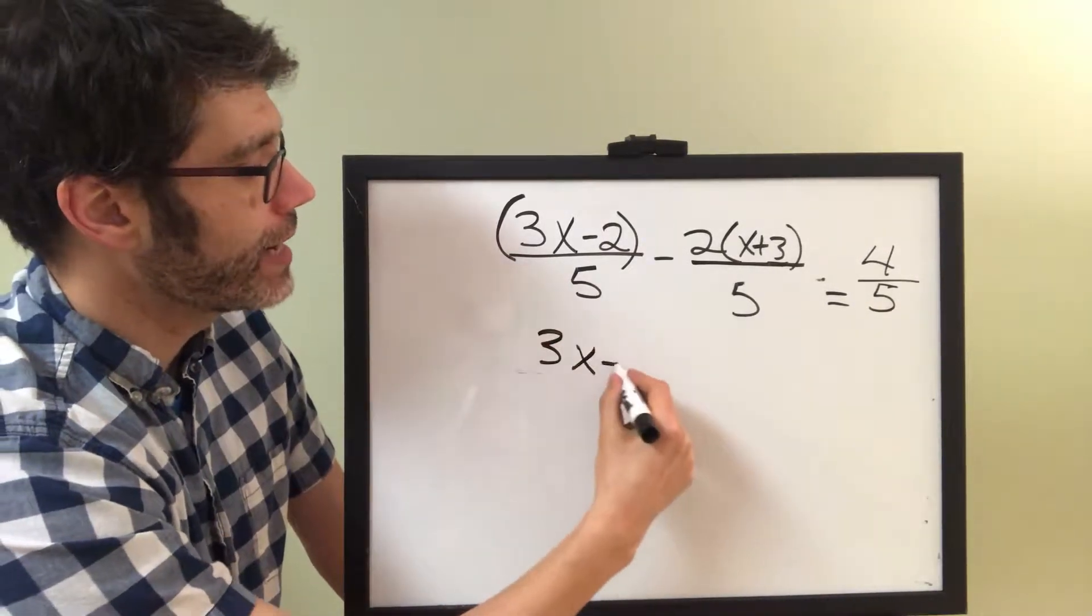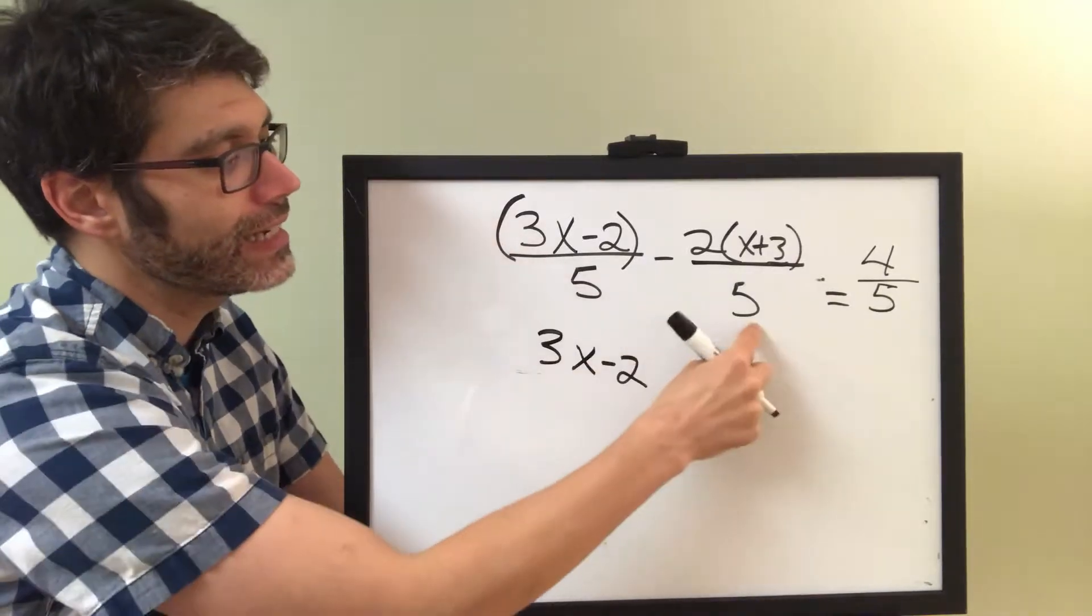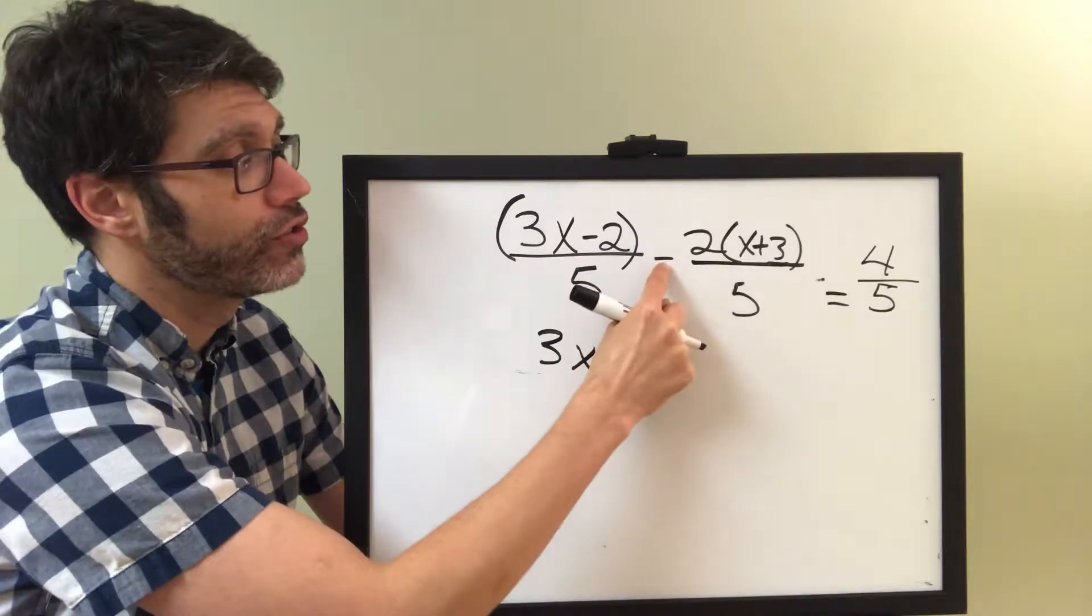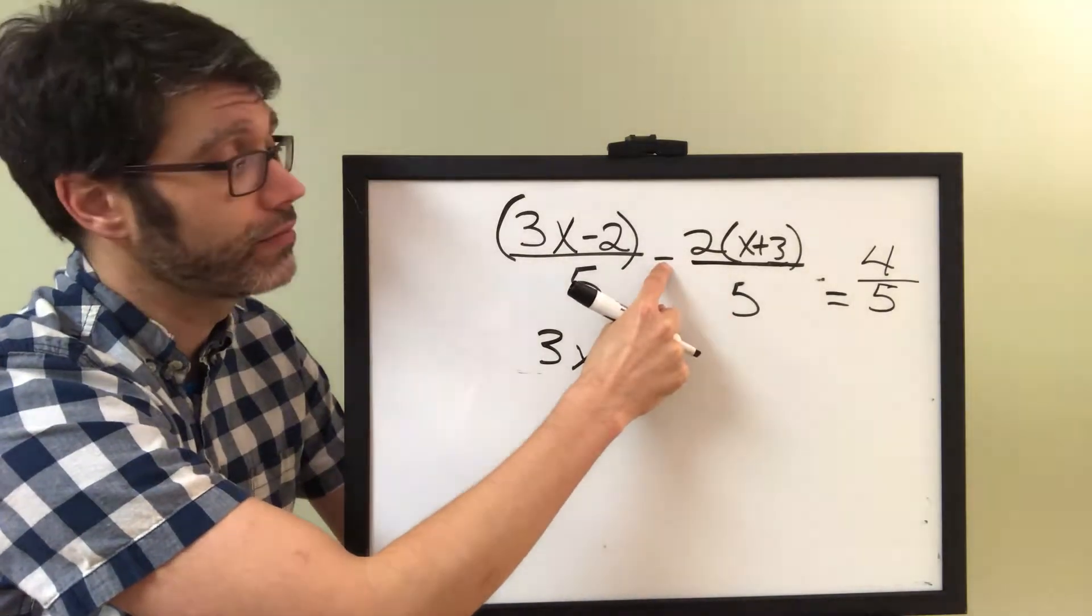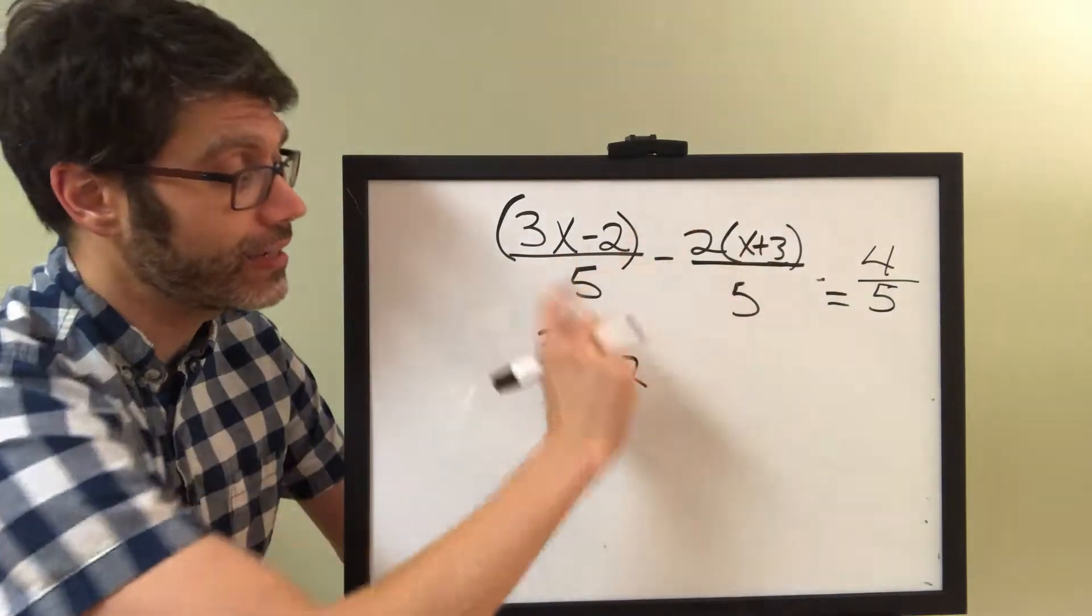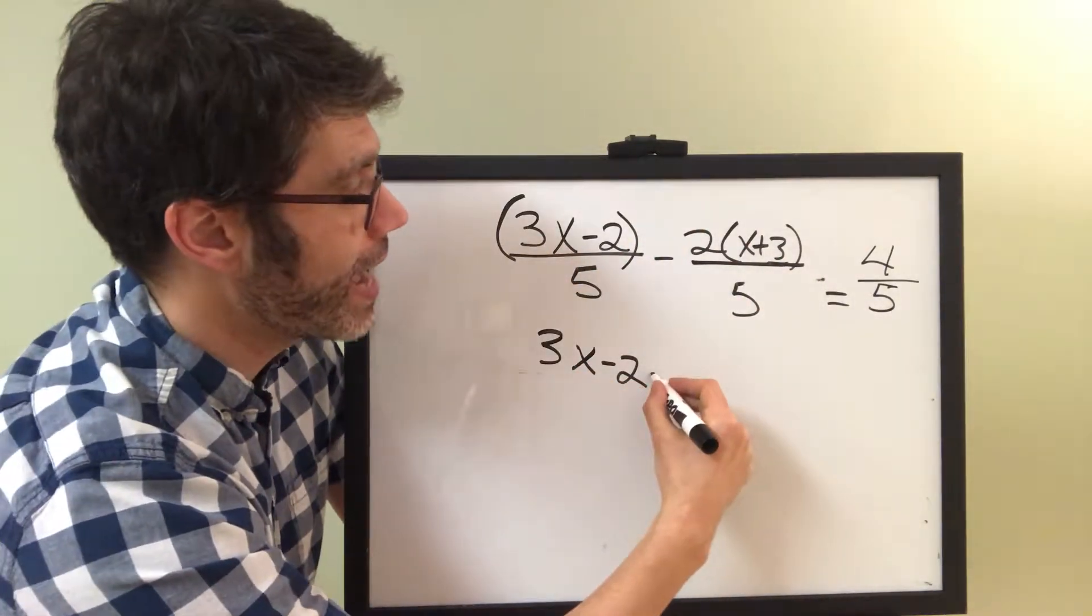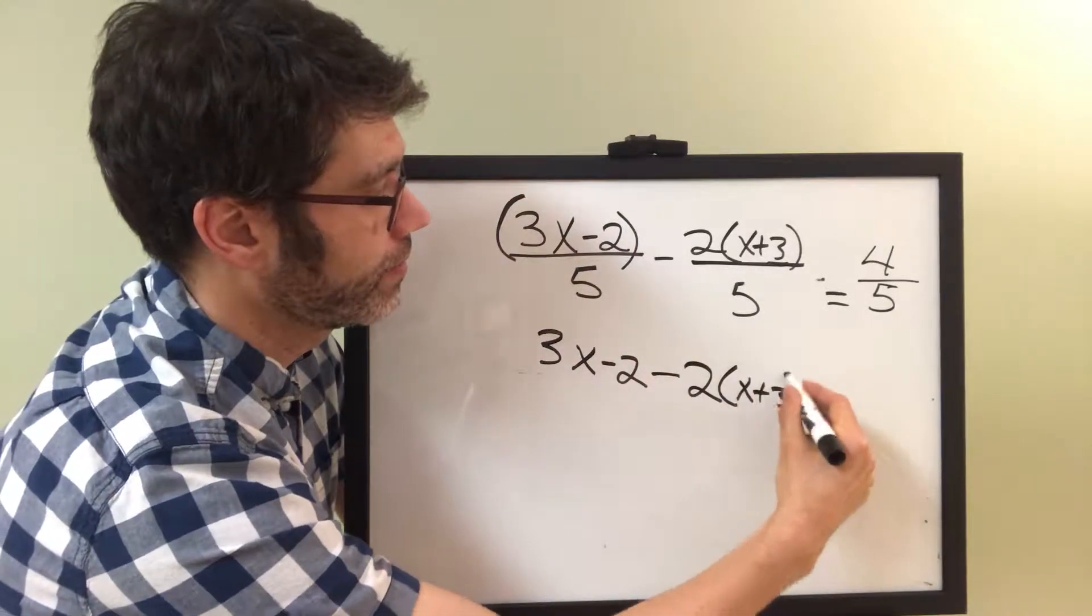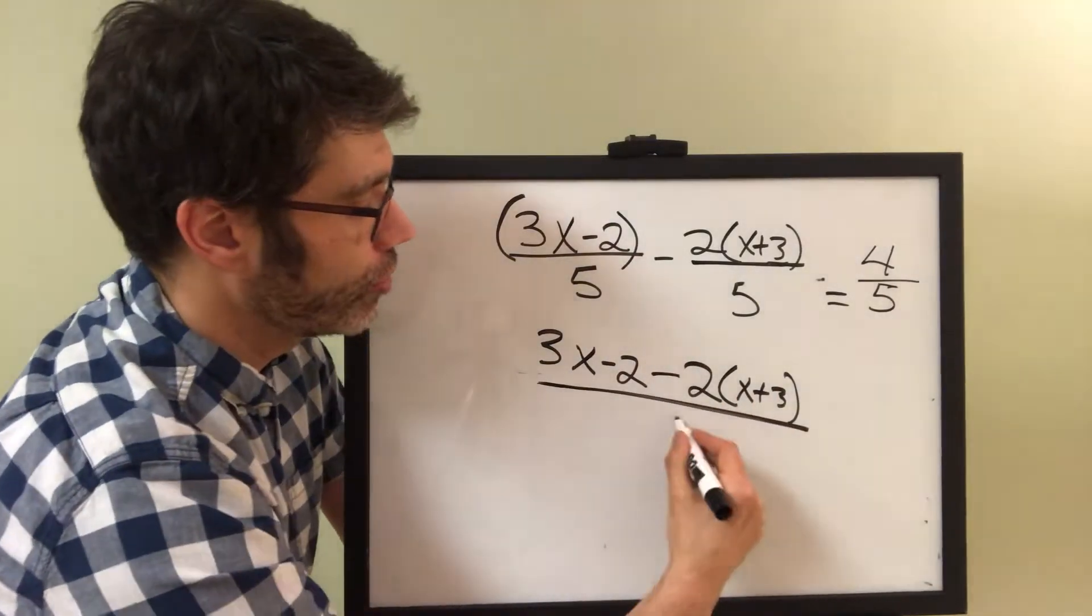We've got 3x minus 2. Now, since the denominators are the same here, what we can do is subtract the numerators. If this was an addition sign, we would have to add the two numerators, but since this is a subtraction, we're subtracting.